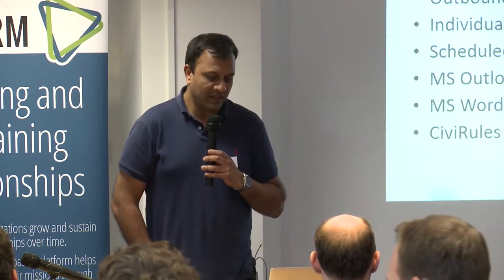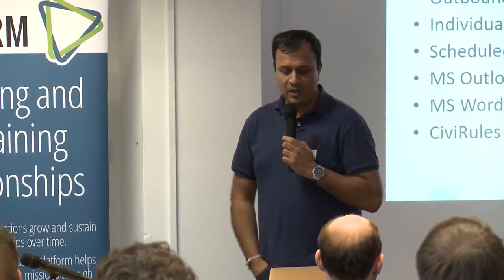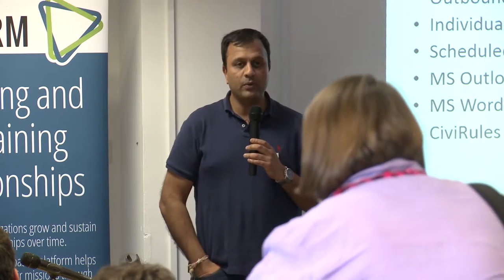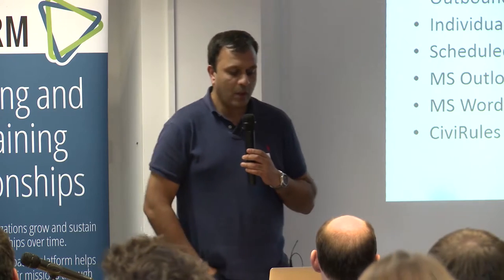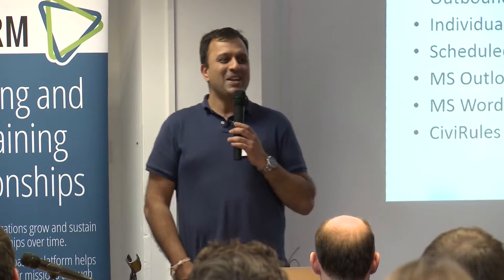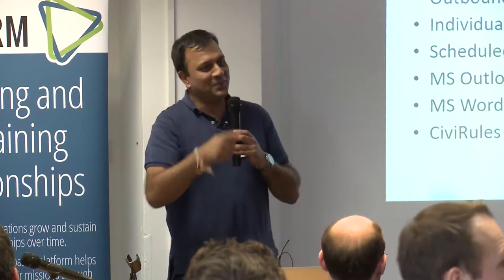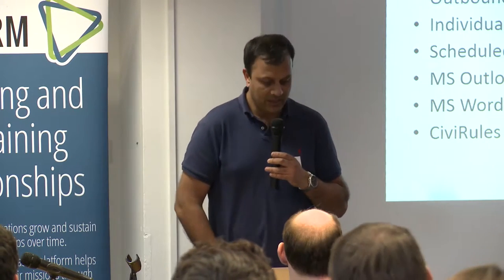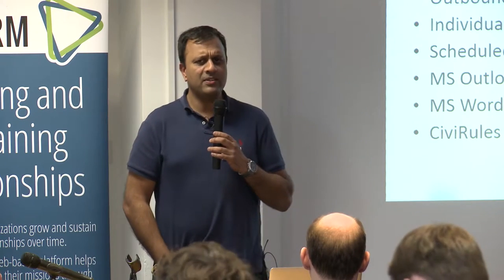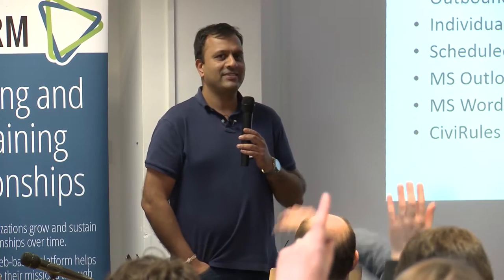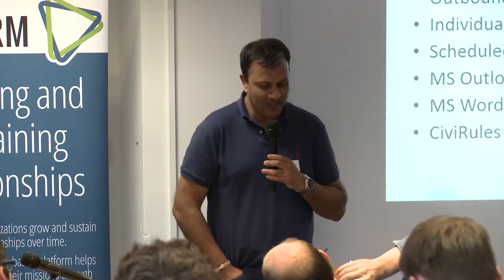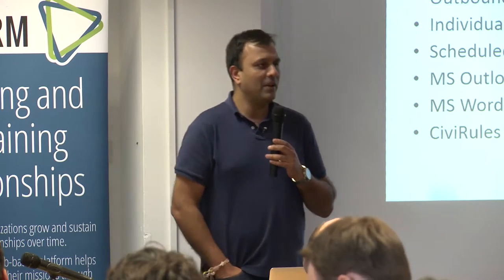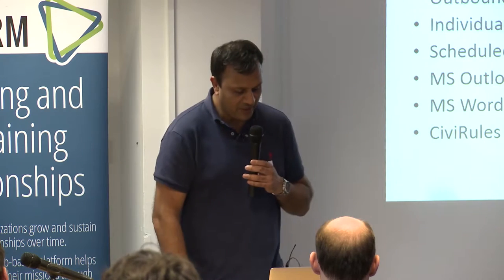I've only got one slide - the idea is to show as much of the system as possible. The agenda is looking at communication preferences in CiviCRM: how you can set them for a contact and what options are available. What are the different outbound communication methods? How to individualise communications - so 'dear John' as opposed to 'dear sir or madam'. Using scheduled reminders - which is probably one of the most misnamed things in CiviCRM - it's actually automated or triggered emails.